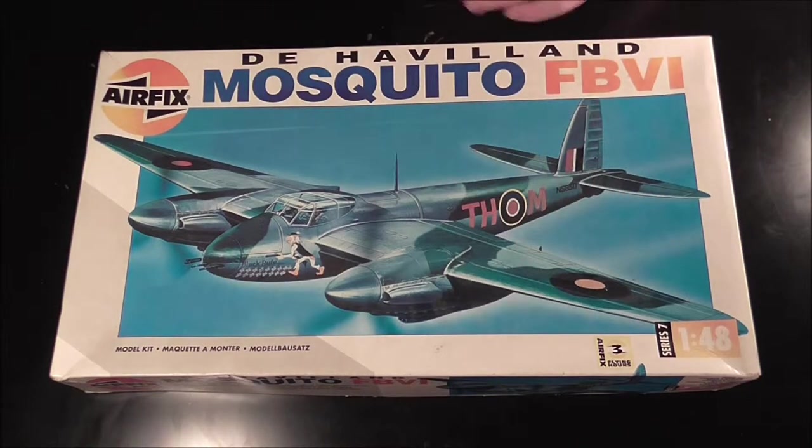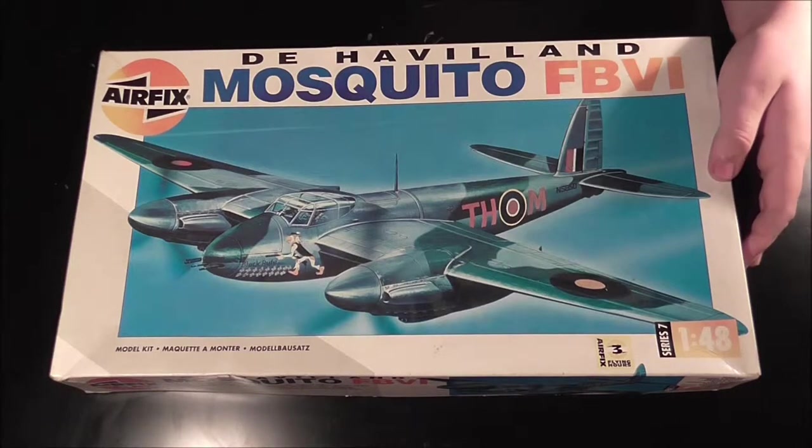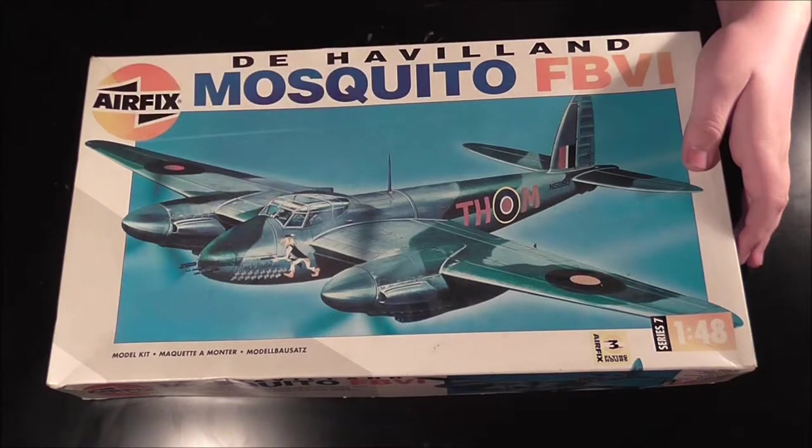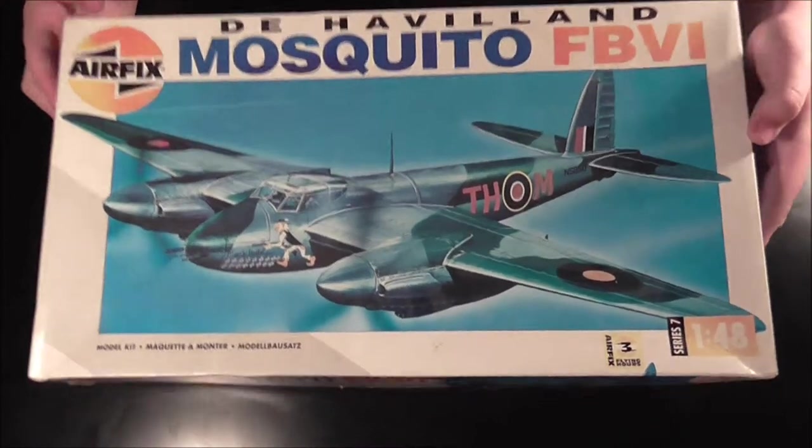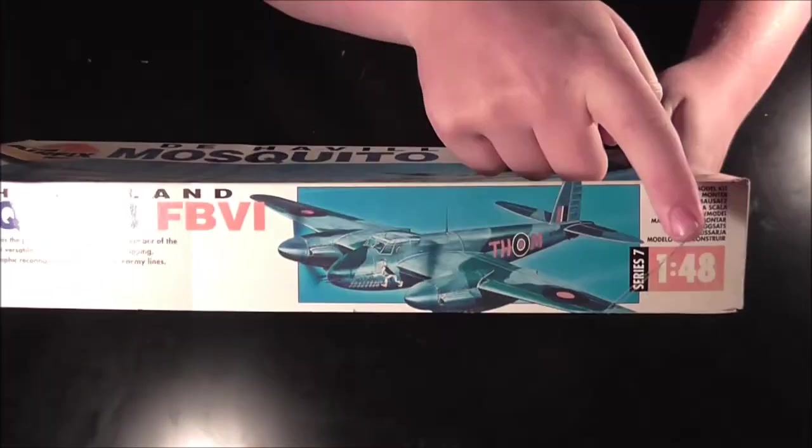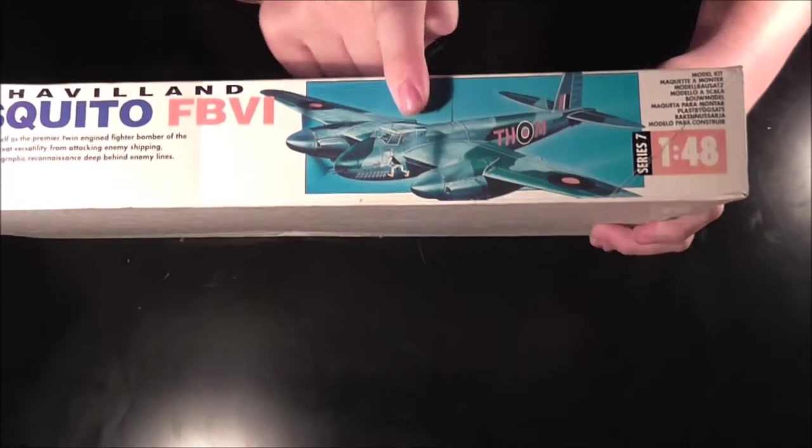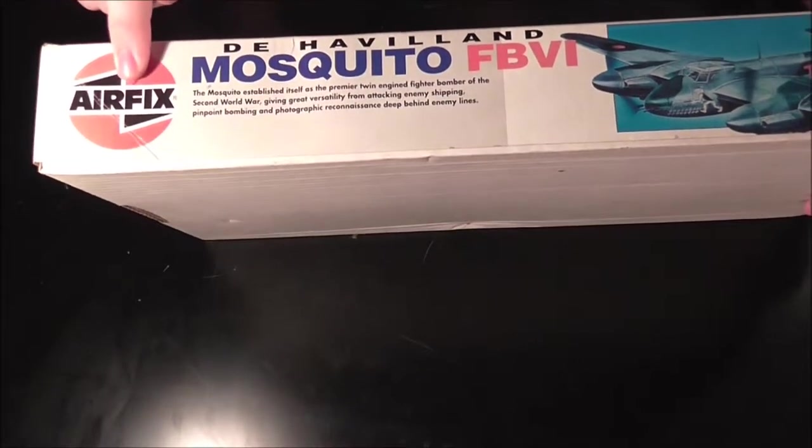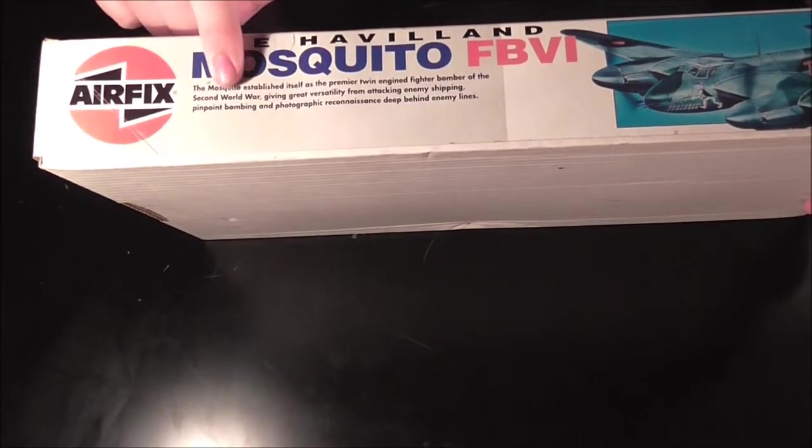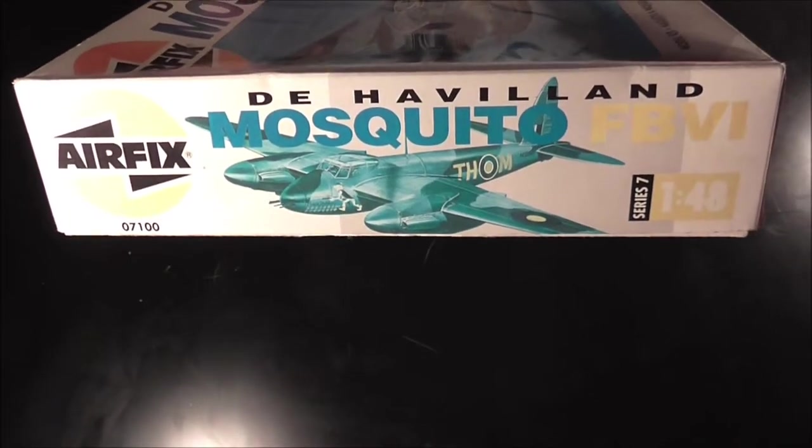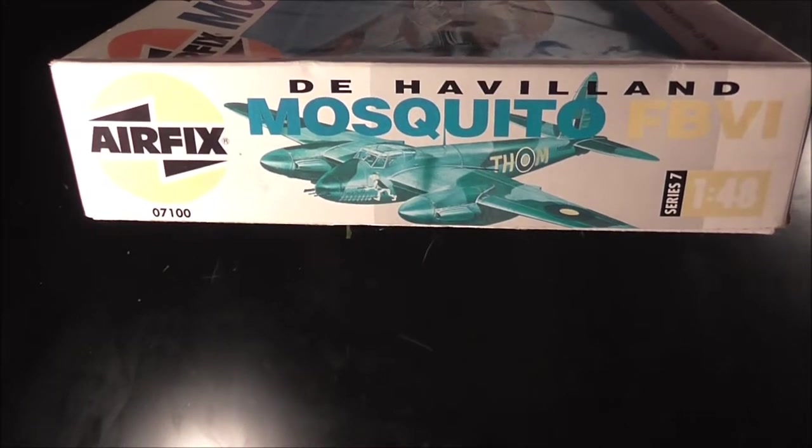Obviously the box art is just plain and simple, just a normal mozzie. Same model kit in all the different languages there. So, on that side of the box we have the scale, the picture again, and obviously saying Mosquito, Airfix and a little bit about it. That side of the box, again, everything that you'd expect, just a picture and everything.